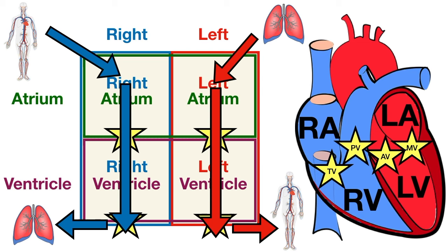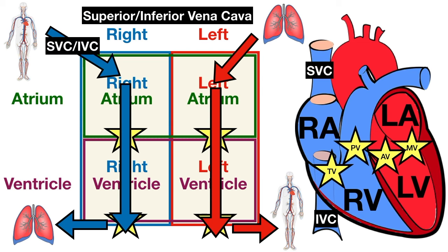The first two structures carry deoxygenated blood from the body to the right atrium and are known as the superior vena cava and inferior vena cava. Any blood vessel carrying blood to the heart is a vein, and vena cava helps you remember that. The superior vena cava is located superiorly and carries deoxygenated blood from the upper body to the right side of the heart. The inferior vena cava is located inferiorly and carries deoxygenated blood from the lower body.